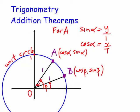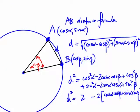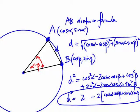Once we have those two points — placed in the first quadrant, though they can go into other quadrants — we look at the distance AB. Using the distance formula, we end up with a d² expression equal to 2 minus 2 times (cos α cos β + sin α sin β).